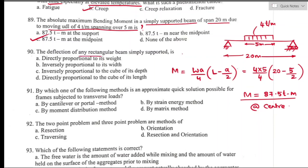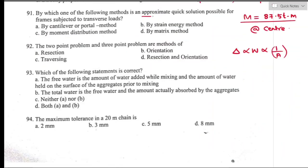Question number ninety: the deflection of a simply supported rectangular beam is directly proportional to its weight. Option A is the right answer. Question number ninety-one: for an approximate quick solution for a frame subjected to transverse load, the cantilever or portal method can be used. Option A is the right answer.